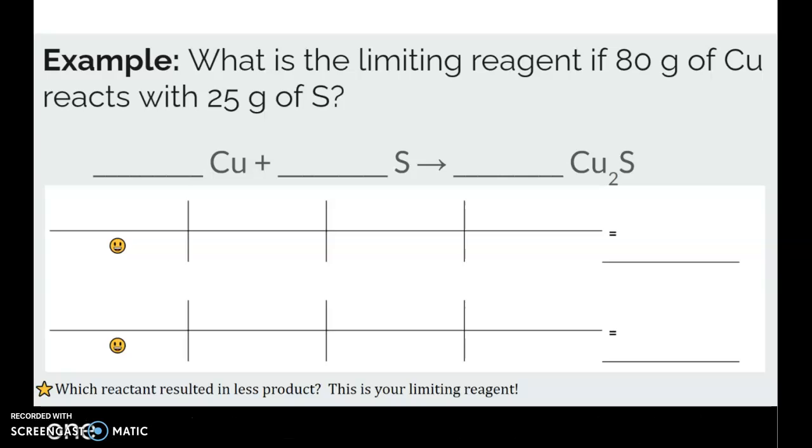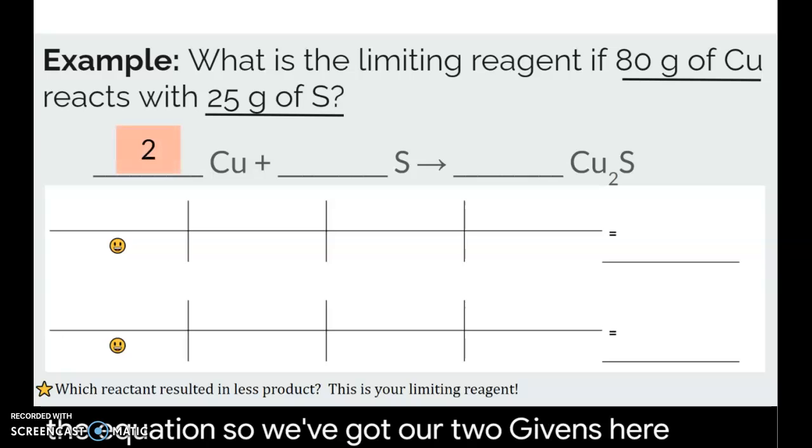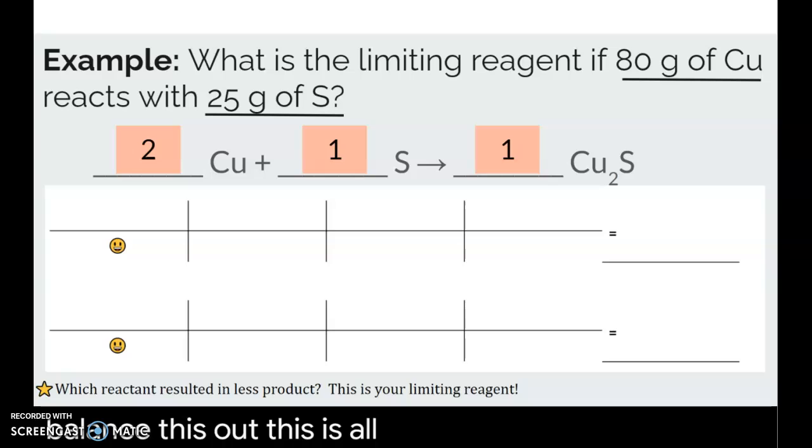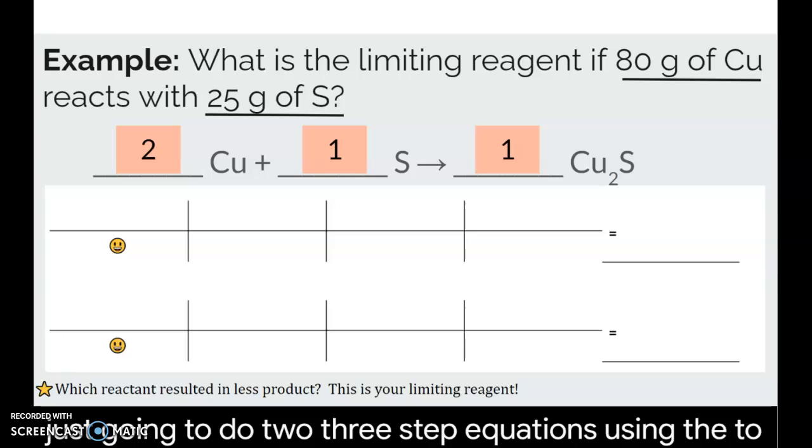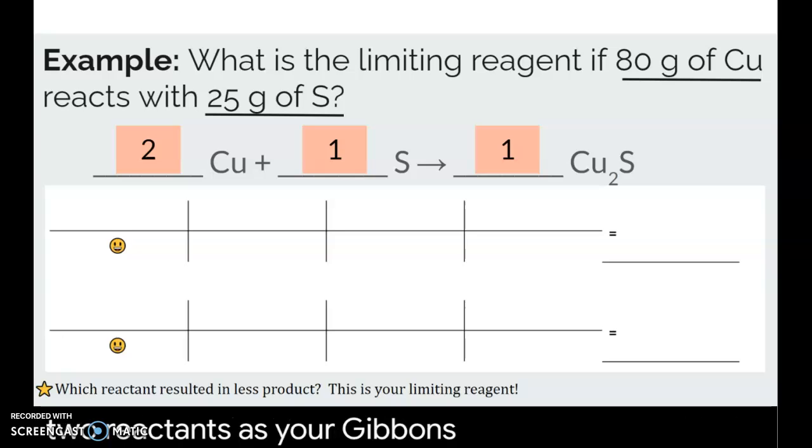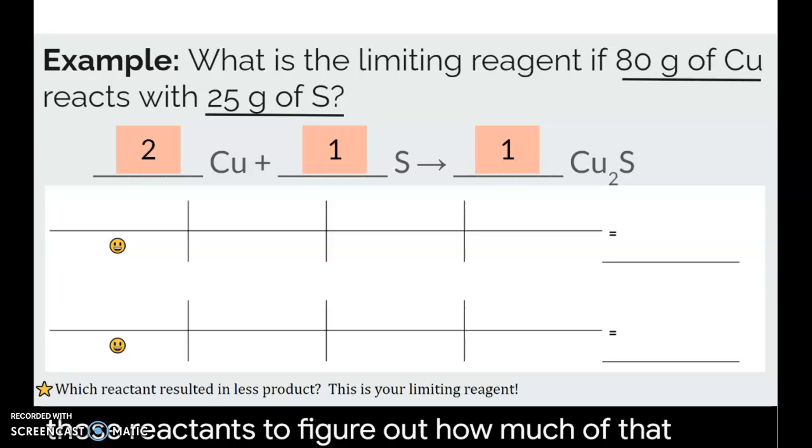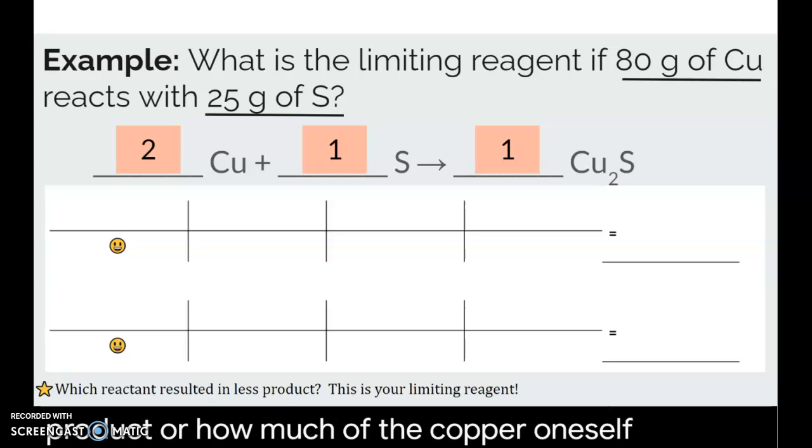So we are going to do one example here. Our first step would be to balance the equation. So we've got our two givens here to balance this out. This is all you need. And then you're just going to do two three-step equations using the two reactants as your givens. So we've got 80 grams of copper and 25 grams of sulfur. And so we're going to do a stoichiometry problem for each of those reactants to figure out how much of that product or how much of the copper one sulfide we can make.